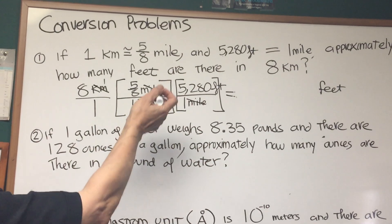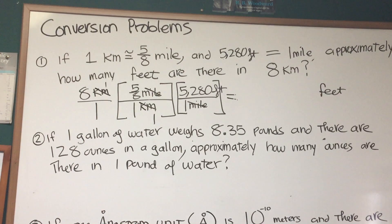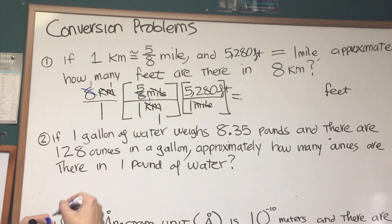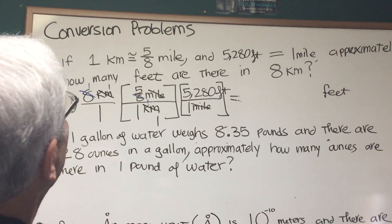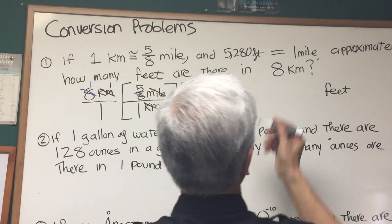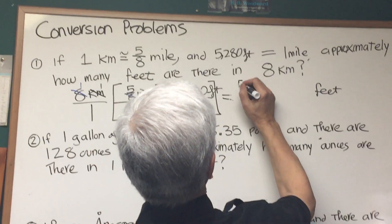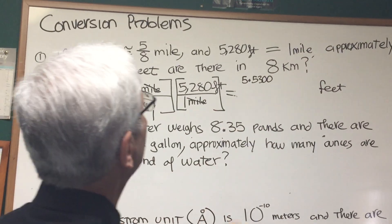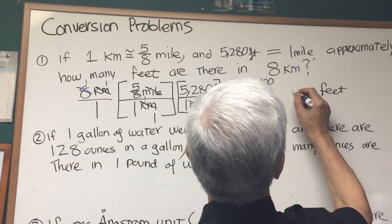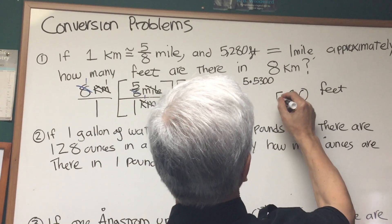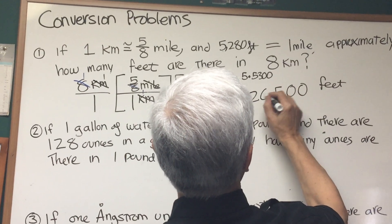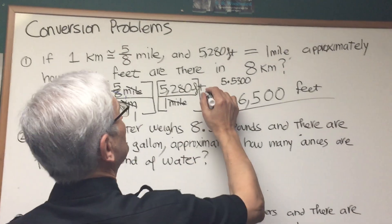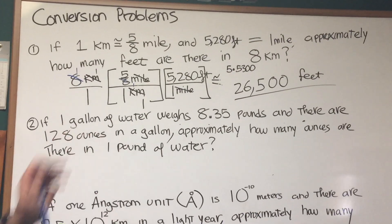Now all we have to do is multiply everything out. Eight times five-eighths: the eight cancels and we're left with just five. So five times 5,280 — since we're only looking for an approximate value, we can say five times 5,300. Five times three is fifteen, carry the one, five fives is twenty-five, giving us twenty-six — approximately 26,500 feet. Our answer only needs to be approximate.